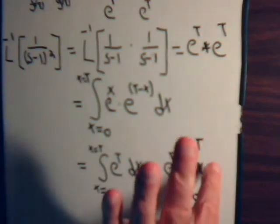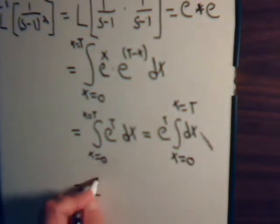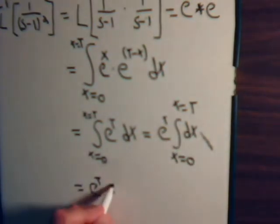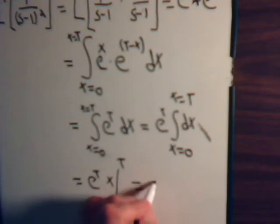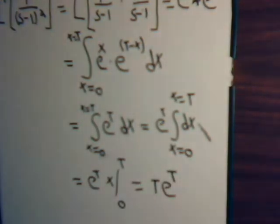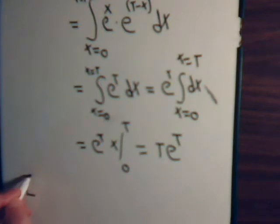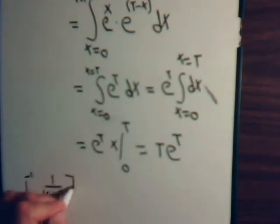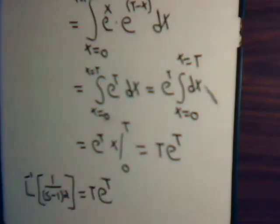That equals e to the t times the integral of dx going from x equals 0 to x equals t. So this just equals e to the t — the integral of dx is x — evaluated from 0 to t. That just equals t times e to the t. So our problem is finished. The inverse Laplace transform of 1 over s minus 1 squared equals t e to the t.